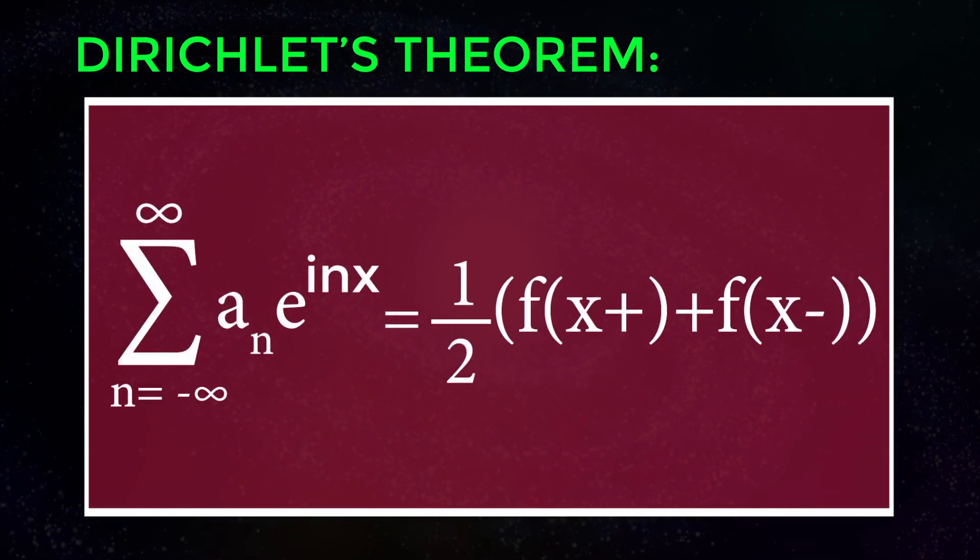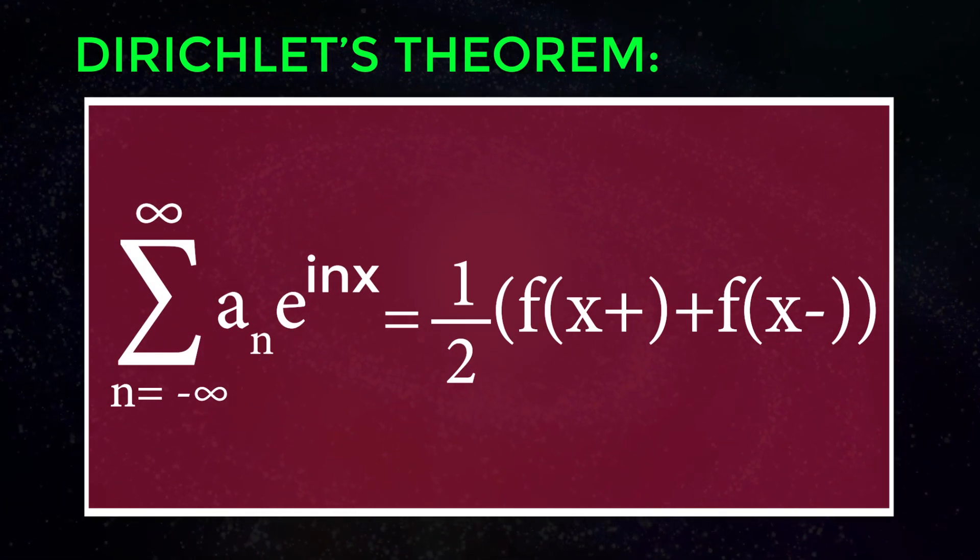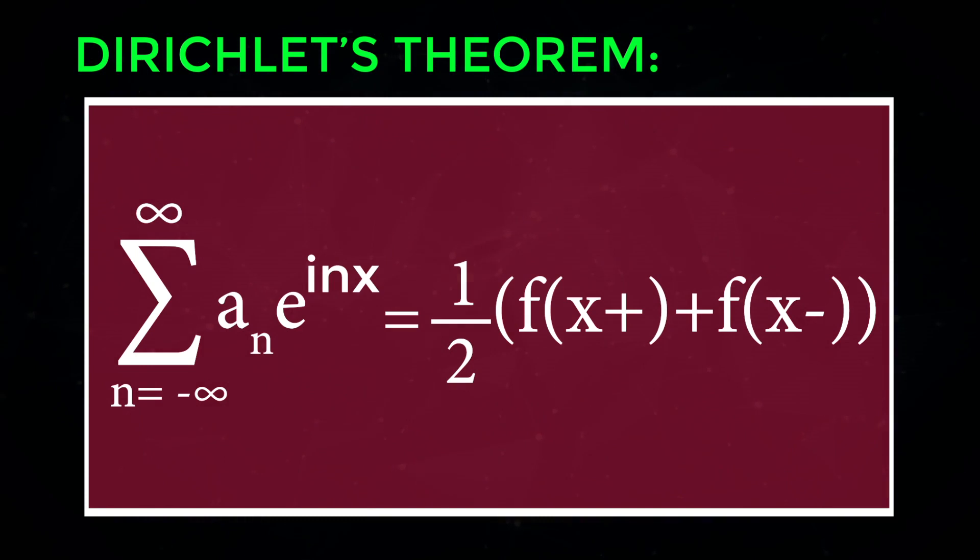n equals minus infinity to infinity of a_n into exponential of i n x equals 1 by 2 into f of x plus plus f of x minus